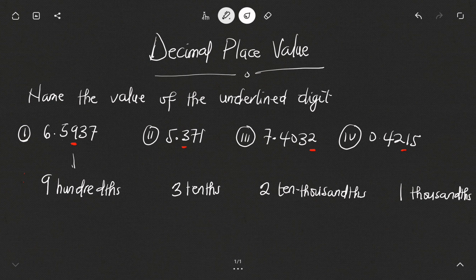For the last one, the 1 occupies the thousandths position, so its value is one thousandth. To summarize: nine hundredths, three tenths, two ten-thousandths, and one thousandth.